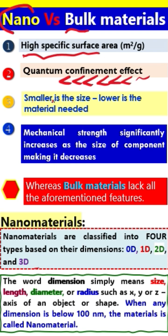The next point is straightforward: the smaller the size, the lower the amount of material needed. We need less material to make and fabricate devices. Additionally, the mechanical strength increases when we decrease the size.